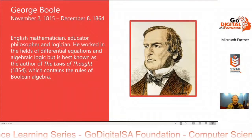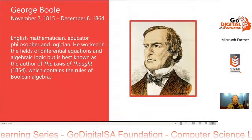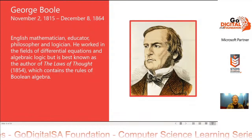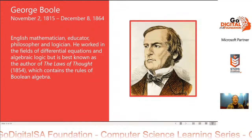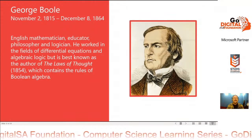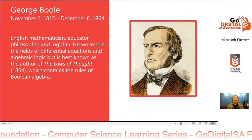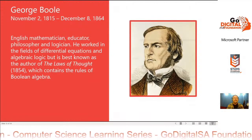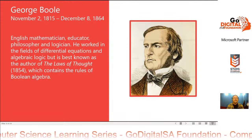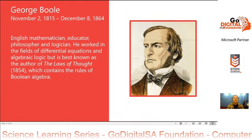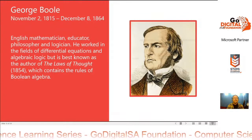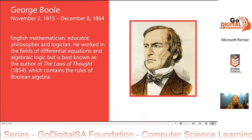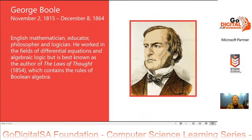George Boole lived in the 1800s. He was an English mathematician, educator, philosopher, and logician. He worked in the fields of differential equations and algebraic logic, but is best known as the author of The Laws of Thought, which he published in 1854, which contains the rules of Boolean algebra.